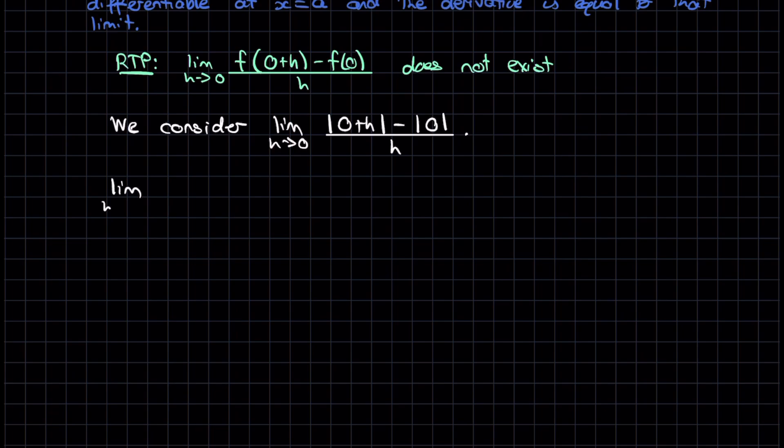So first I look at what happens when h approaches 0 from below. I'll just write it out again like this, all over h. And now I start to simplify. Well, this will be the limit as h approaches 0 from below. That's just the absolute value of h minus 0, which is the absolute value of h, all over h.